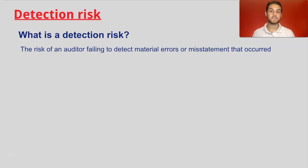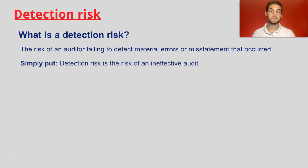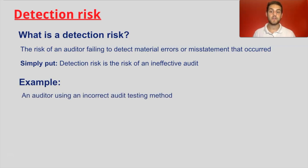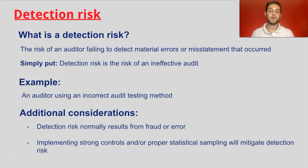Moving on to detection risk — what is detection risk? Detection risk is the risk of an auditor failing to detect material errors or a misstatement that occurred. Simply put, detection risk is the risk of an ineffective audit. For example, an auditor using an incorrect audit testing method may not be able to detect risk appropriately. Detection risk normally results from fraud or error, and implementing strong controls and proper statistical sampling will mitigate detection risk.